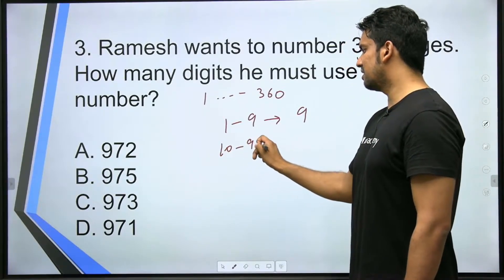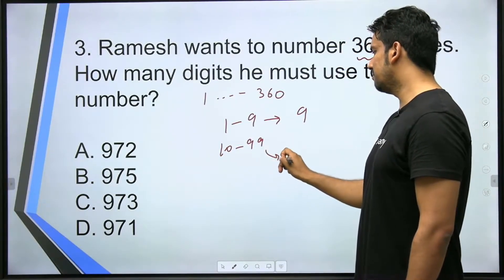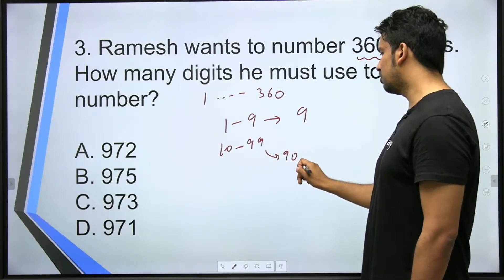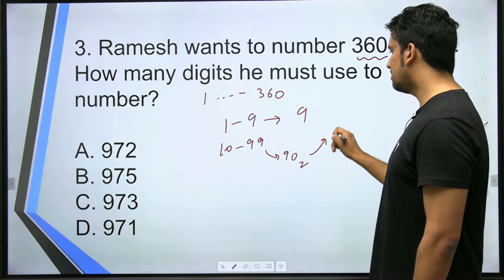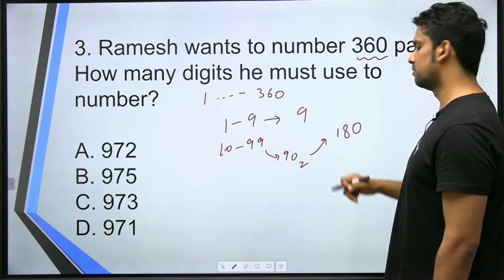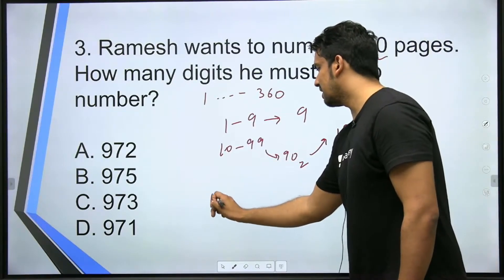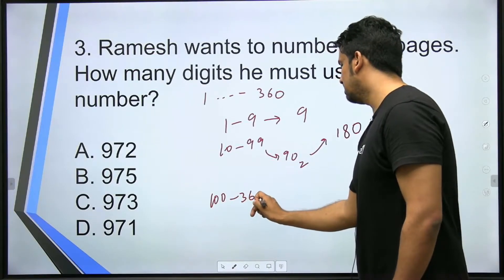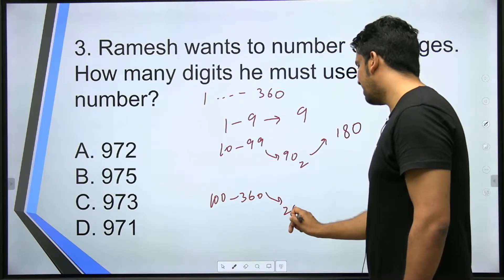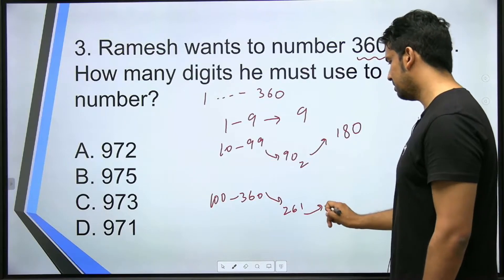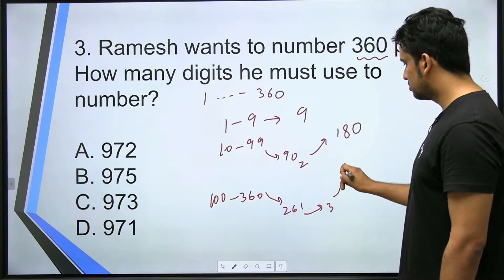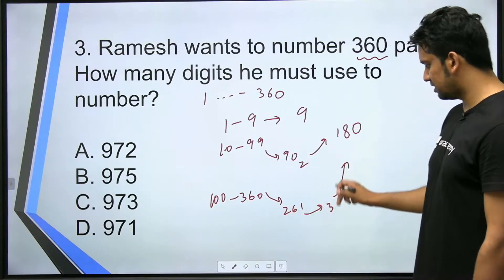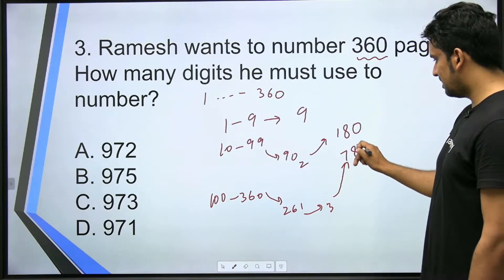From 10 to 99, there are total 90 numbers. And each number is a 2-digit number. So he'll use total 180 digits. From 100 to 360, there are total 261 numbers. Every number is a 3-digit number. So how many total digits will he use? 261 into 3 is 783.